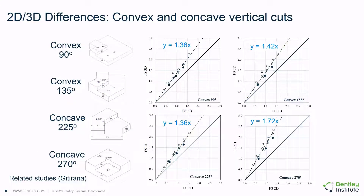There are obvious geometry differences between 2D versus 3D configurations. This behavior was demonstrated previously by research performed by Professor Gitarana from the University of Guiana in Brazil. In this slide we note differences between 2D and 3D analysis for vertical cuts with convex and concave configurations. It can be seen that 3D analysis produces factors of safety 36% to 72% higher than 2D analysis for these geometry scenarios.